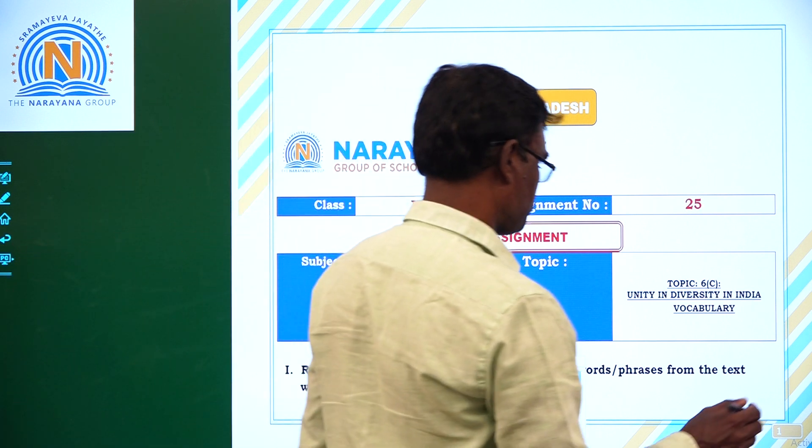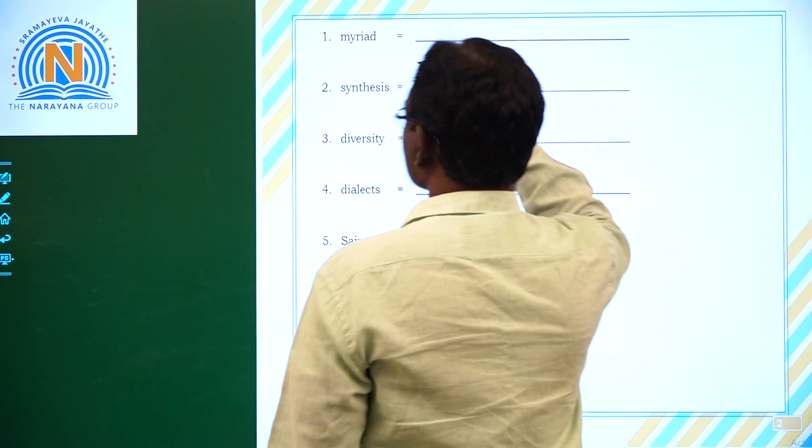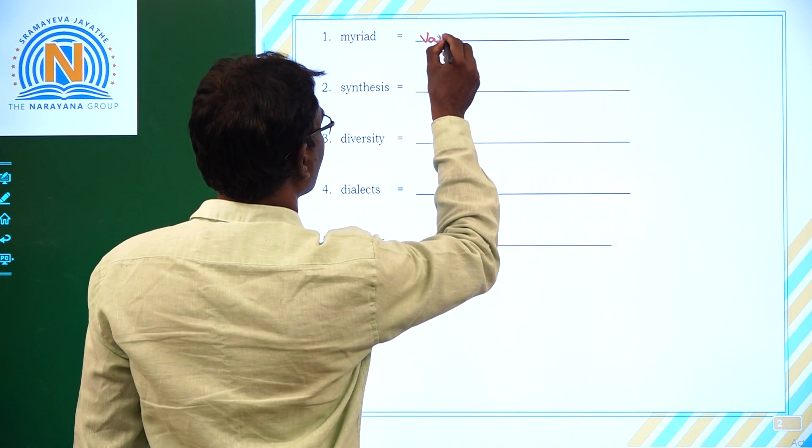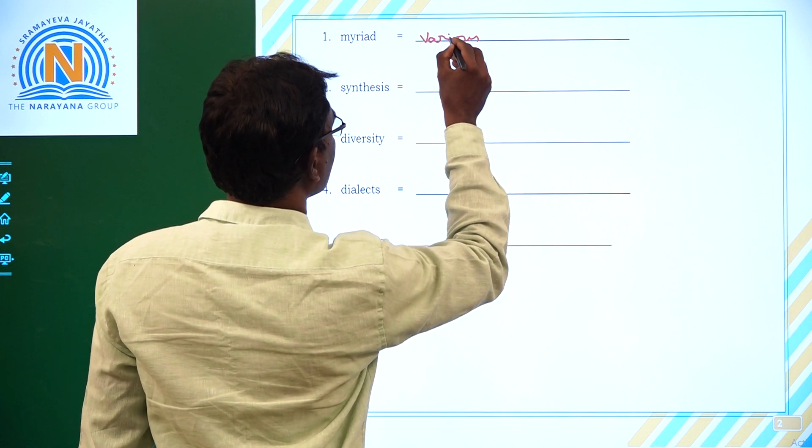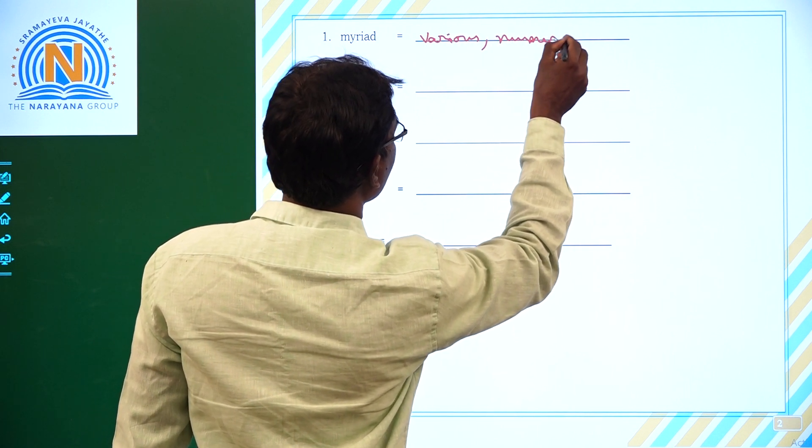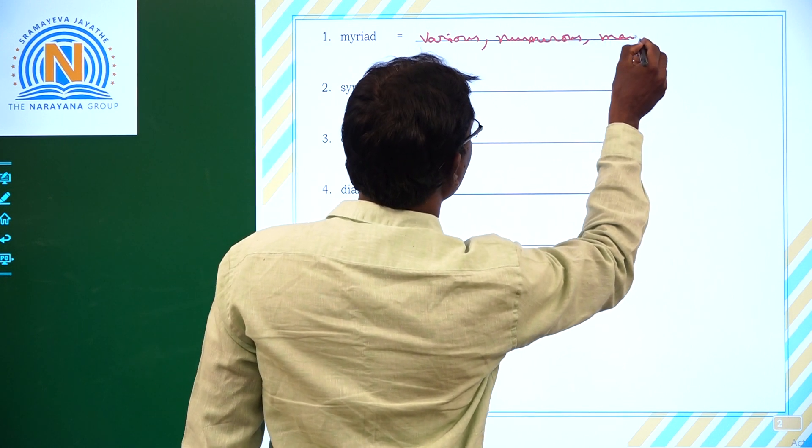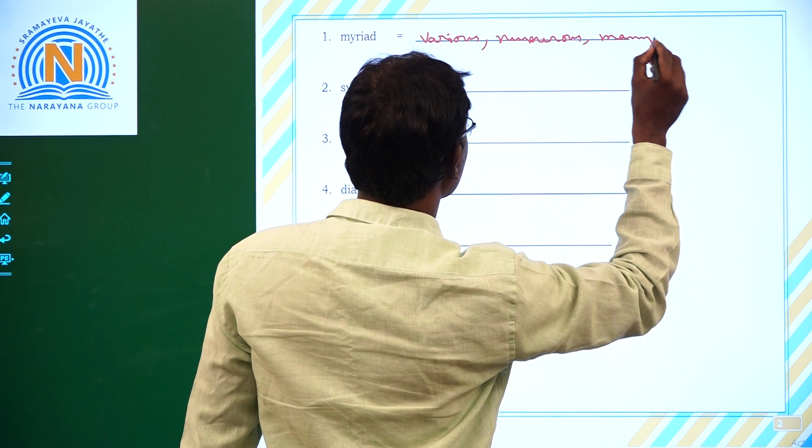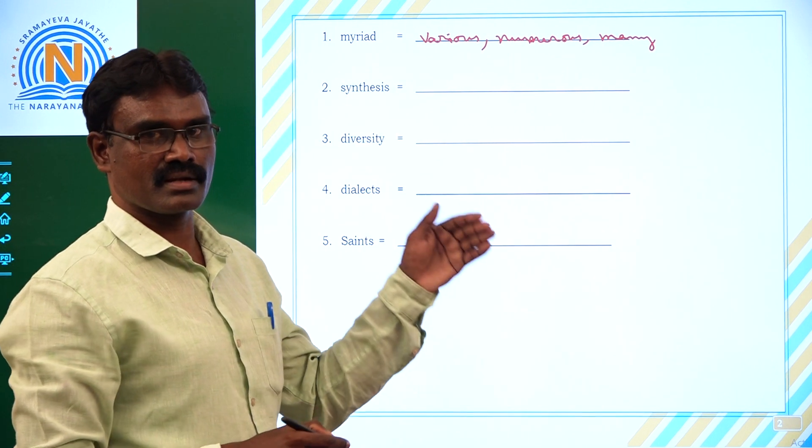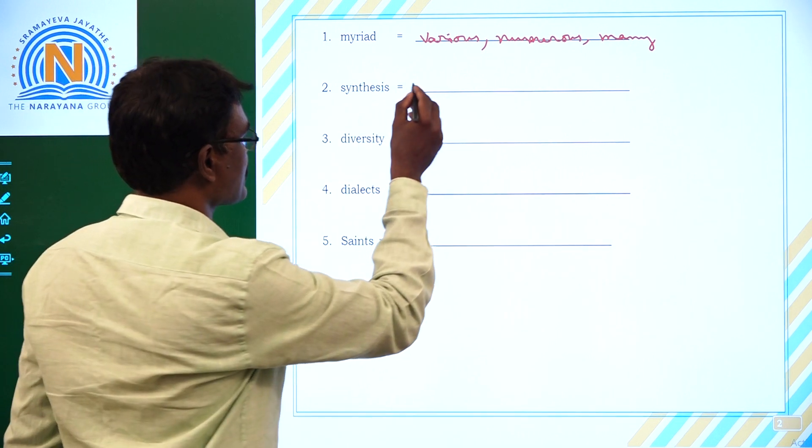First one: myriad. Myriad means various, numerous, many. So many words are there, we can write as many words as we can.